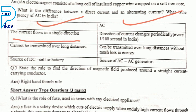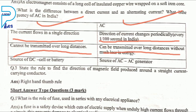In AC, the direction of current changes periodically every 1/100 second in India. DC cannot be transmitted over long distances. AC can be transmitted over long distances without much loss of energy — easily transferred with the help of electric poles. The source of DC is a cell or battery; the source of AC is a generator.